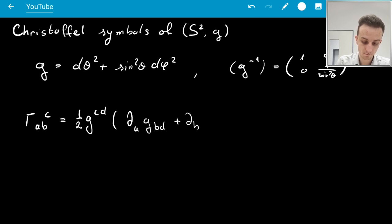I've used index notation in the sense that I'm summing over repeated indices, so b is summed over, for example, over 1 and 2 or theta and phi.